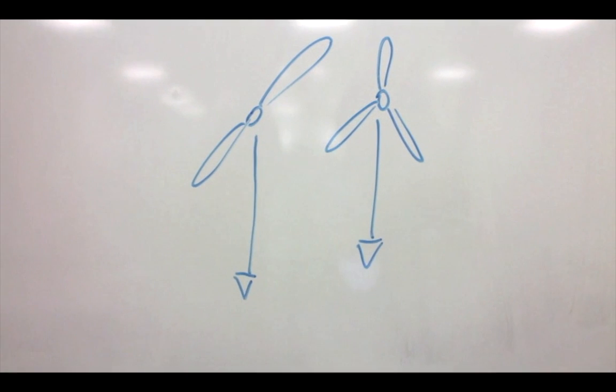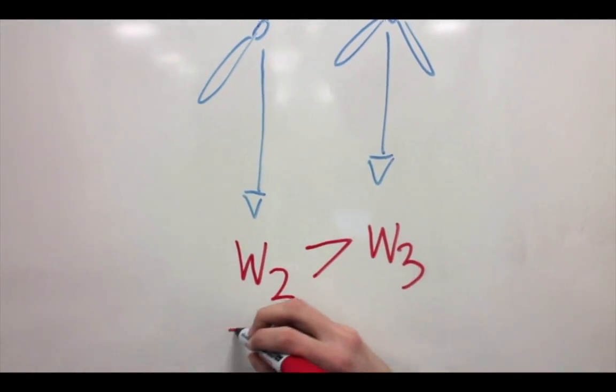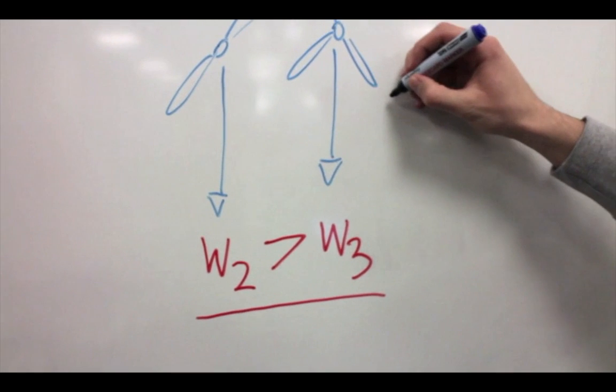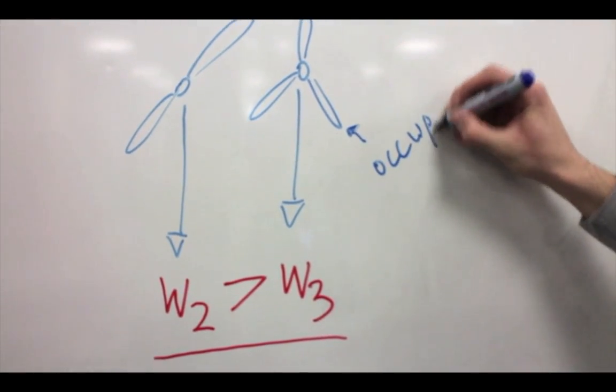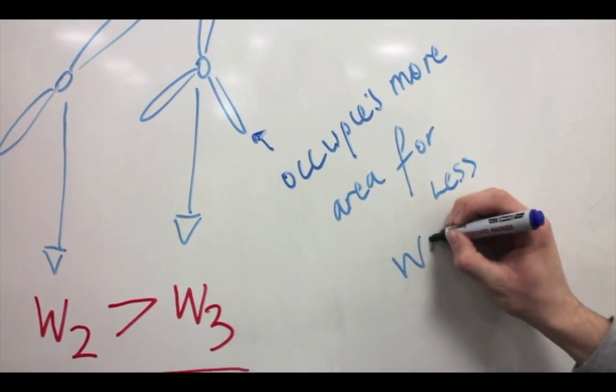We found that a three-bladed design would increase efficiency since it would require less weight to occupy the same solidity within the area swept by the turbine. As well as this, three-bladed designs achieve better coefficients of power at lower TSRs. They are also telescopically better balanced.